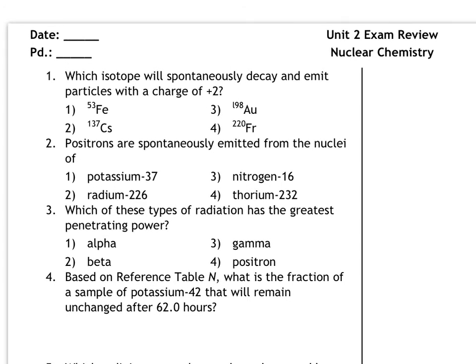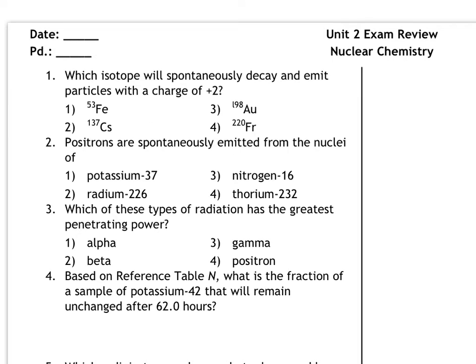Which isotope will spontaneously decay and emit particles with a charge of positive 2? You can definitely use table M for this one and maybe table O, which just depends on how much you remember. But the only nuclear particle that has a charge of positive 2 as a decay particle is the alpha particle. Alphas are the only ones that have a charge of 2, and you would need to also use table N to figure out which of these choices actually decays using alpha decay. One hint is that elements with really large mass numbers like francium-220 tend to decay by alpha decay. I'm going to go ahead and say that it's choice 4, francium-220.